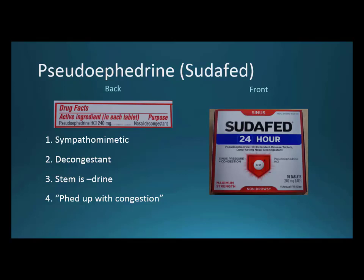Pseudoephedrine is a sympathomimetic — it mimics the sympathetic nervous system. That's why you get jitteriness with it, because it causes an increase in heart rate and similar effects. Be careful with patients who have uncontrolled hypertension. It's a decongestant with the stem '-drine.' Unlike regular Claritin, pseudoephedrine-containing products can't be found on the open OTC shelf — you have to get them from behind the counter.